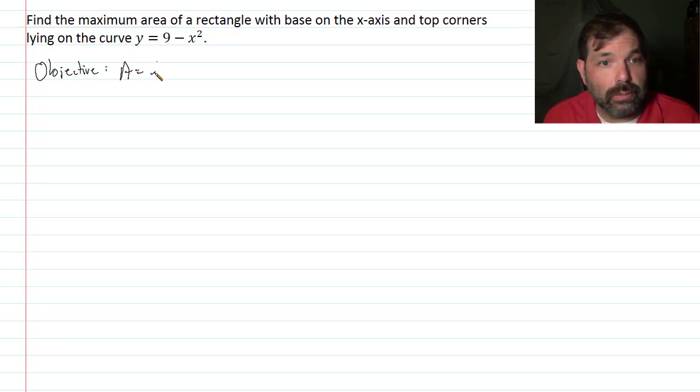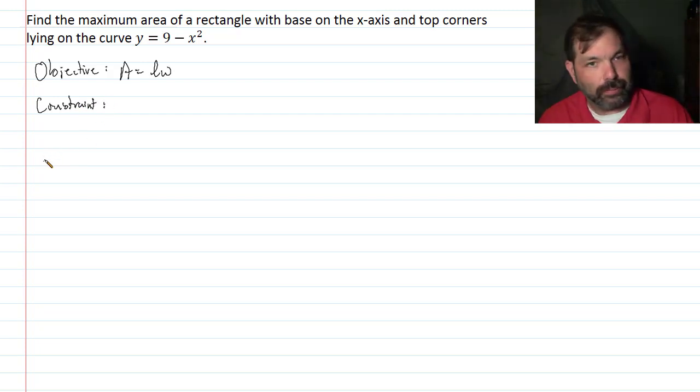So area is a length times a width. All right, so let's think about our constraint here. So our constraint is, we've got to do a little bit of analytic geometry here. The rectangle has the base on the x-axis and top corners lying on the curve y equals 9 minus x square. Let's draw that real quick.